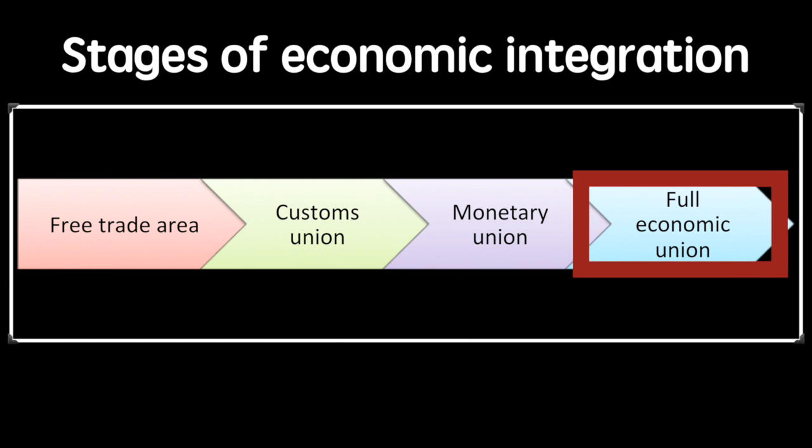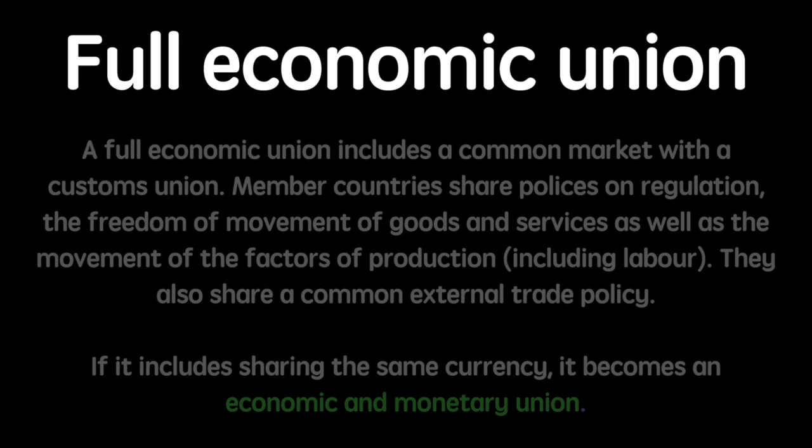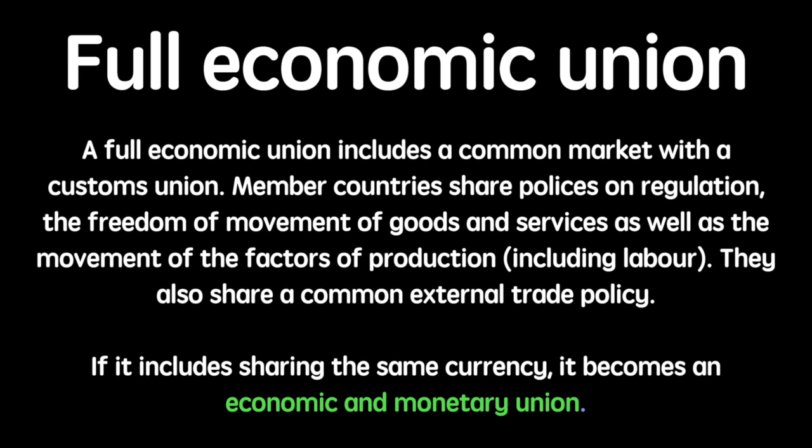Finally, we will consider full economic union. A full economic union includes a common market with a customs union. Member countries share policies on regulation, the freedom of movement of goods and services, as well as the movement of the factors of production, including labour. They also share a common external trade policy. If it includes sharing the same currency, it becomes an economic and monetary union.